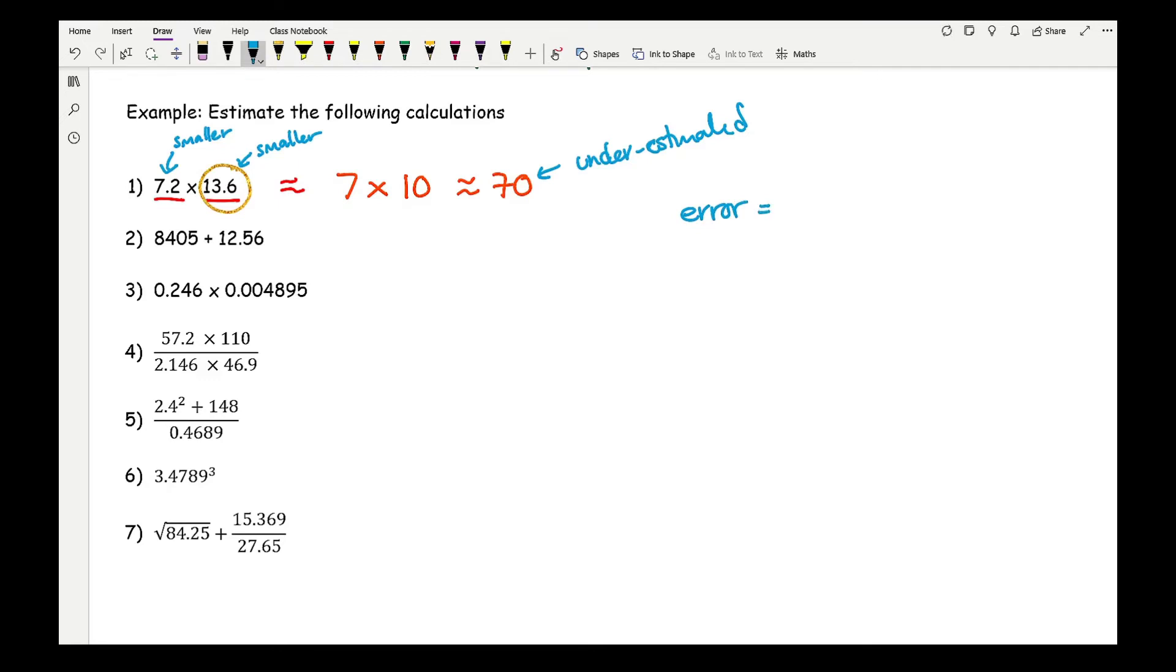Now if a question asked you for the error, then all you'd need to do is do the actual answer minus the estimated answer. So if I was to actually work out the actual answer to this particular question, then all I'd need to do is type it into my calculator. So if I do 7.2 times 13.6, I get an answer of 97, so the actual answer is 97.92.